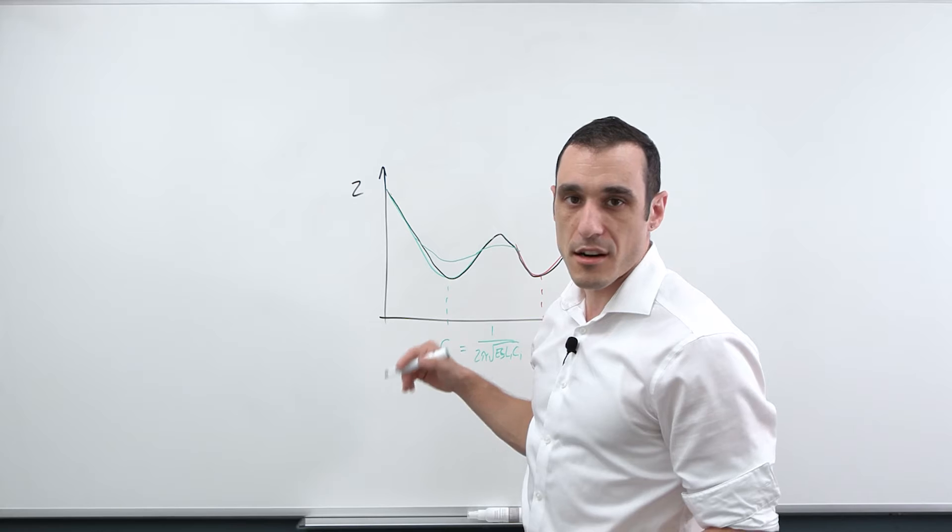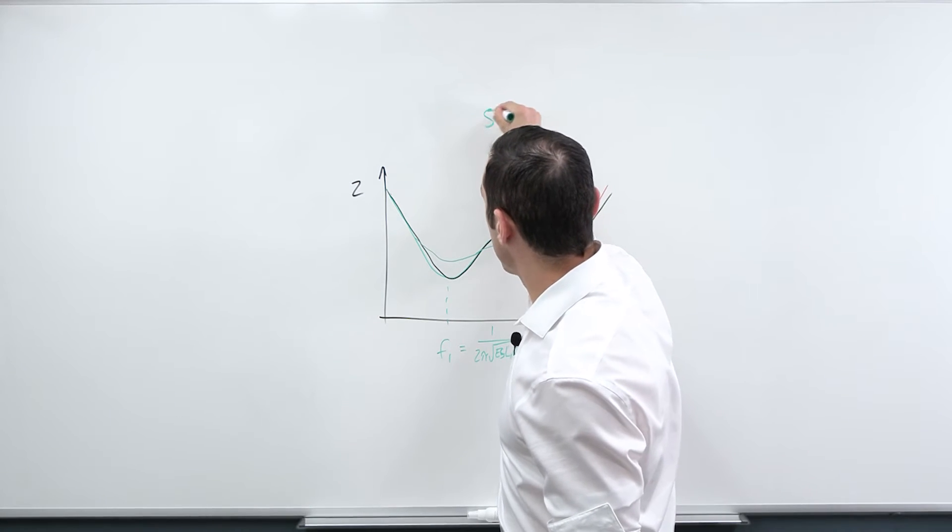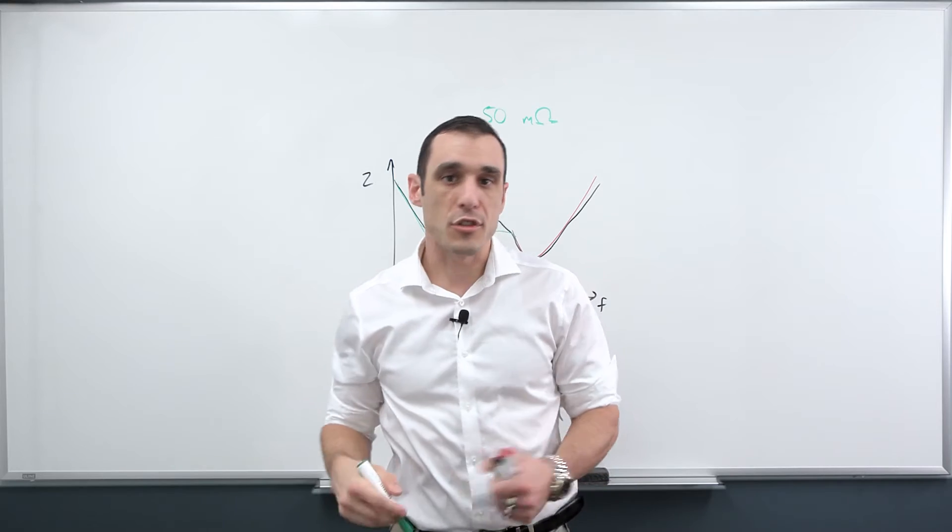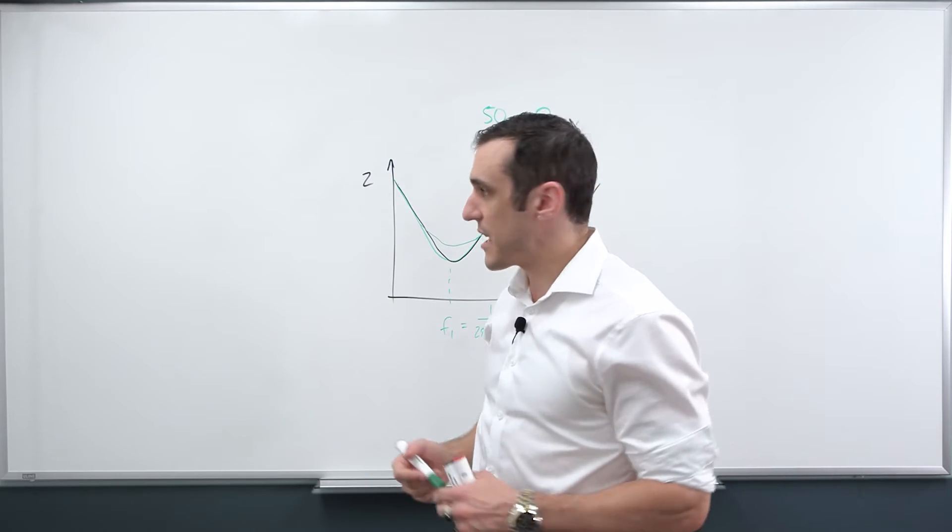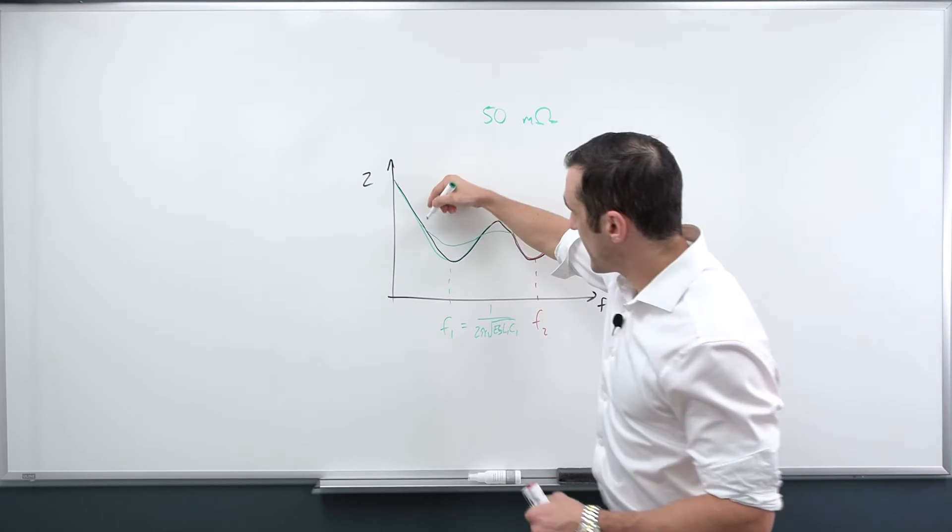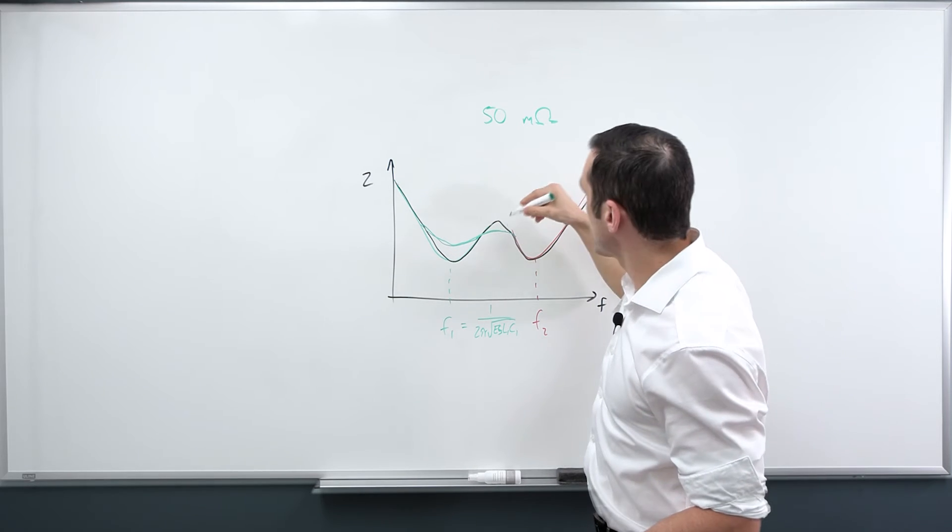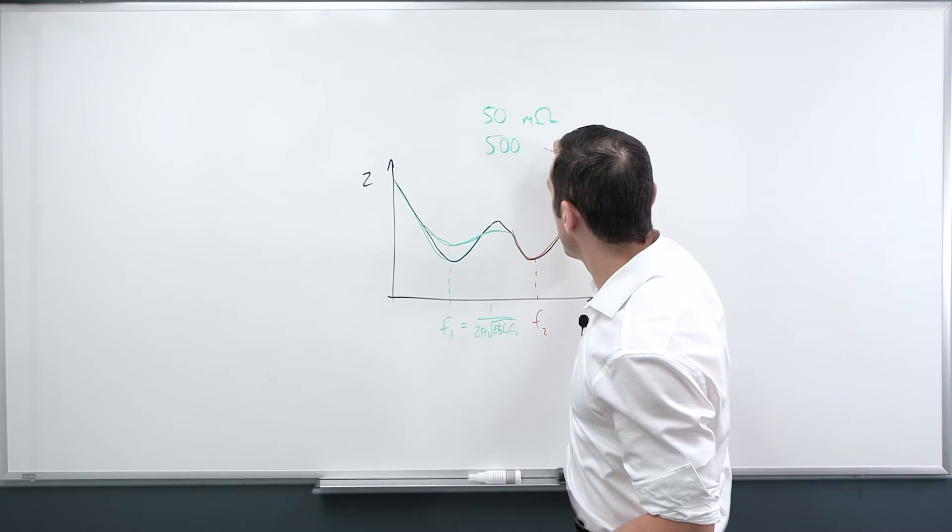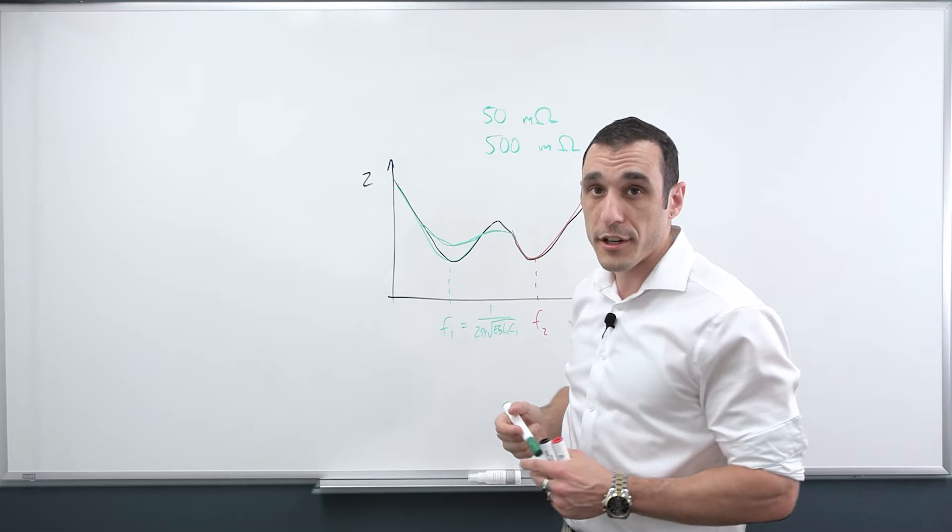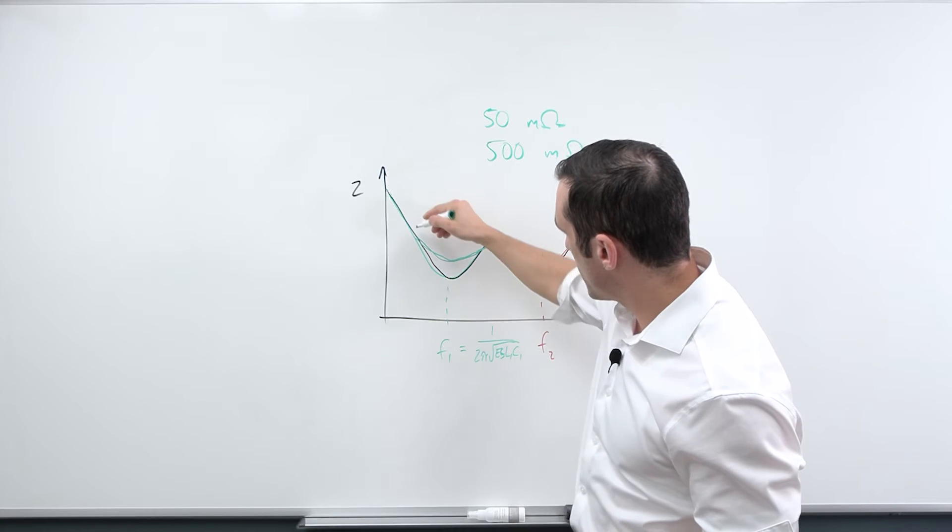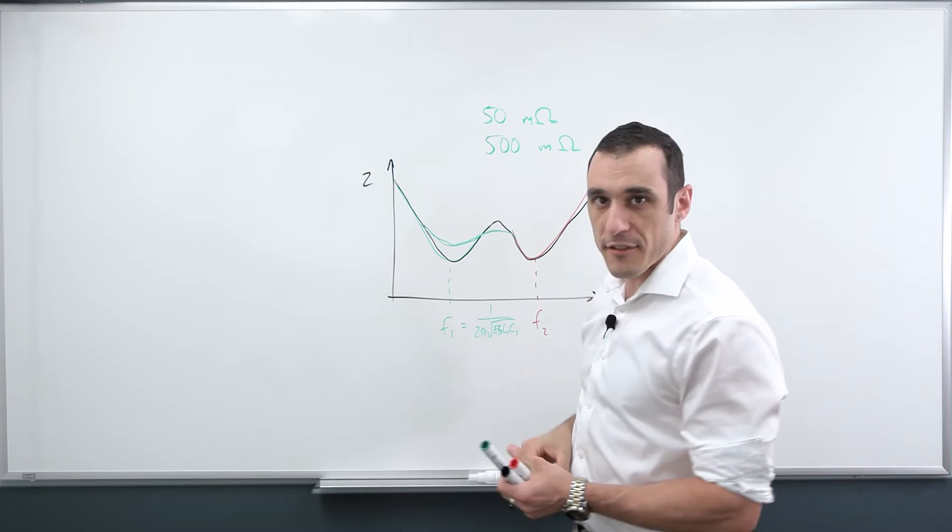So a typical ESR value for a capacitor that you might use in a digital PDN could be as low as 50 milliohms. However, controlled ESR capacitors could have much higher ESR value. And that's one of the reasons that you would use them is to get this higher ESR value, which then flattens out the impedance spectrum a little bit. And so those values could be somewhere in the neighborhood of 500 milliohms. So quite a bit bigger. And that's what then determines this shape of this portion of the curve. So we're just referring to F1 here.